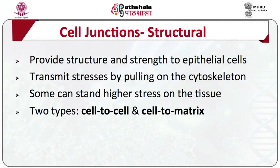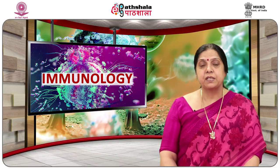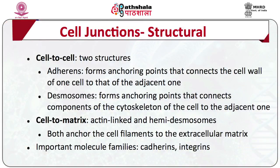Structurally, these cell junctions provide strength to epithelial cells, transmit stresses by pulling on the cytoskeleton, and some can withstand higher stress in the tissue. There are two types: cell-to-cell contact and cell-to-matrix contact. Cell-to-cell includes adherins, which form anchoring points connecting cell walls, and desmosomes, which connect cytoskeletal components. Cell-to-matrix forms a link between the cell and the extracellular matrix, involving cadherins and integrins.